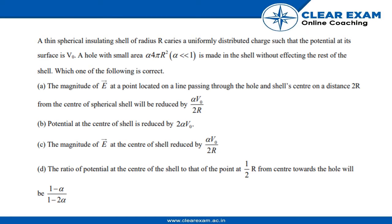A thin spherical insulating shell of radius R carries a uniformly distributed charge such that the potential at its surface is V0. A hole with small area α*4πR² (α << 1) is made in the shell without affecting the rest of the shell.